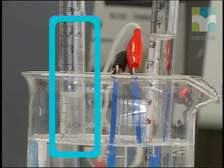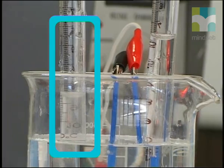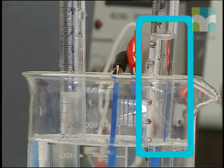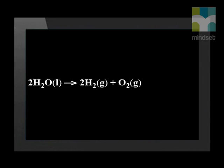So the cylinder with the most gas in it must contain hydrogen and the other cylinder must contain oxygen. If we have a look at the balanced equation again, we can see that the reactant is water. Water is a compound as it is made up of two elements, hydrogen and oxygen.